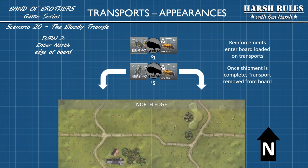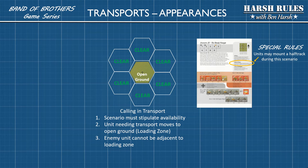You will move the transport to the location where you want to deploy your troops. The second instance where a transport may be used is if the rules stipulate that units may mount a half-track during the scenario. This allows you to call in a half-track to transport your troops. To do this, you must locate a piece of open ground that will become your loading zone, and you must make sure there are no enemy units adjacent to this loading zone. You may then bring a half-track onto the board and load your troops as normal. When you move the loaded transport to the desired location and unload, the transport is removed from the board again.